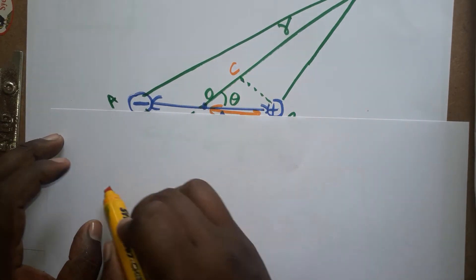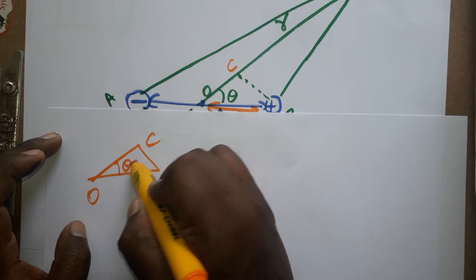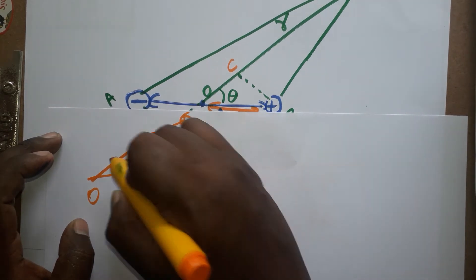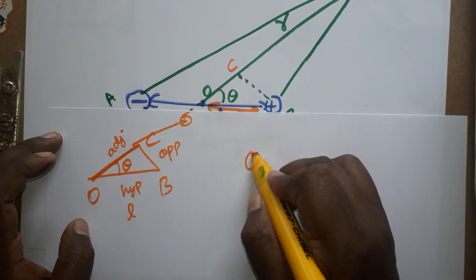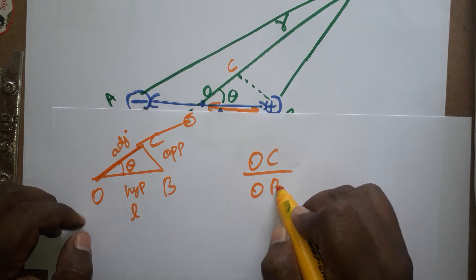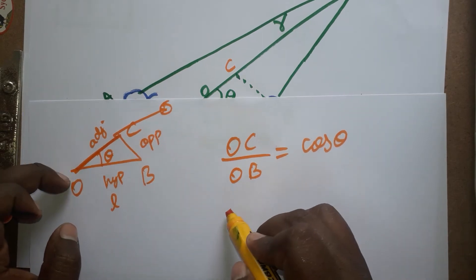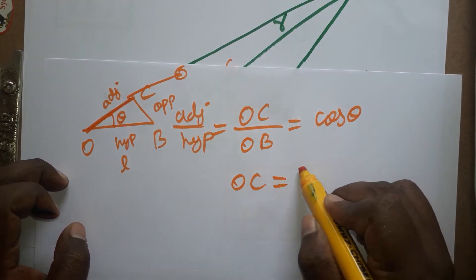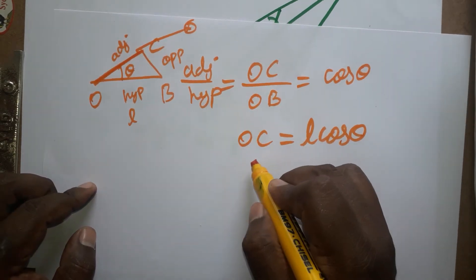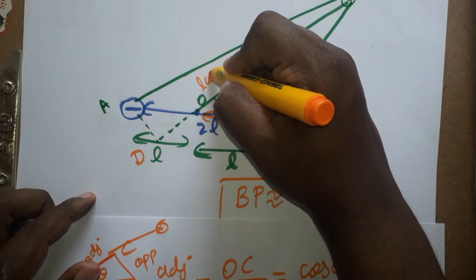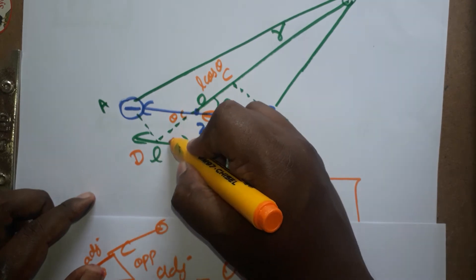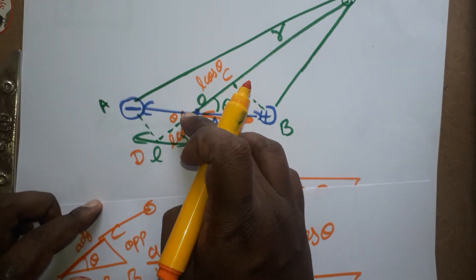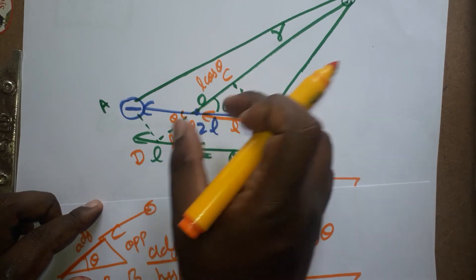I am taking a small triangle OCB. The angle at the test charge position is theta. The hypotenuse is l. I want the adjacent side OC. Adjacent divided by hypotenuse equals cos theta, so OC equals l·cos theta. Similarly, on the other side, OD also equals l·cos theta.